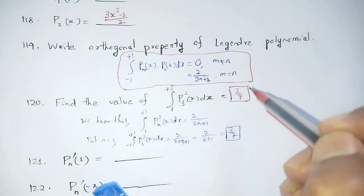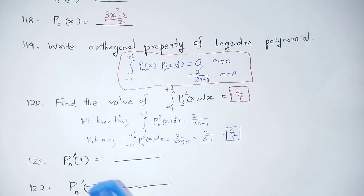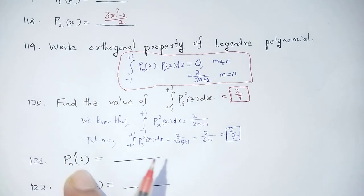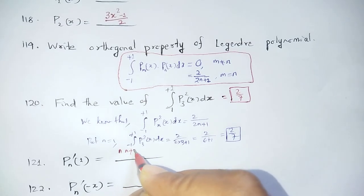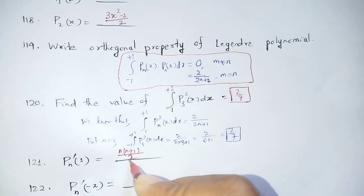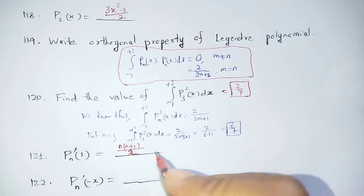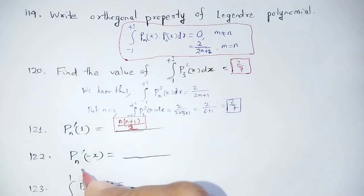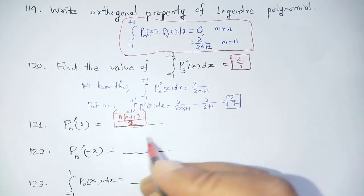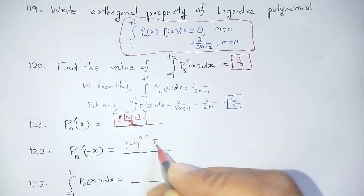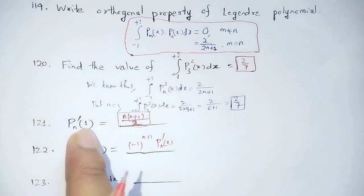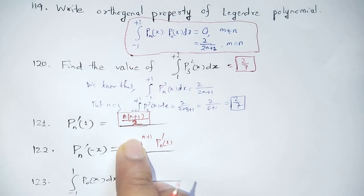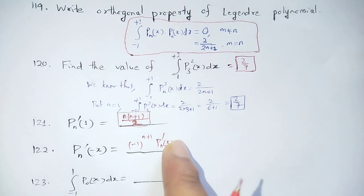Using the orthogonal property of Legendre Polynomial, the answer is 2/7. Next question: the first order differentiation of Pn at x=1 gives n(n+1)/2. Also, the first order differentiation of Pn(-x) equals (-1)^(n+1) times the first order derivative of Pn(x).